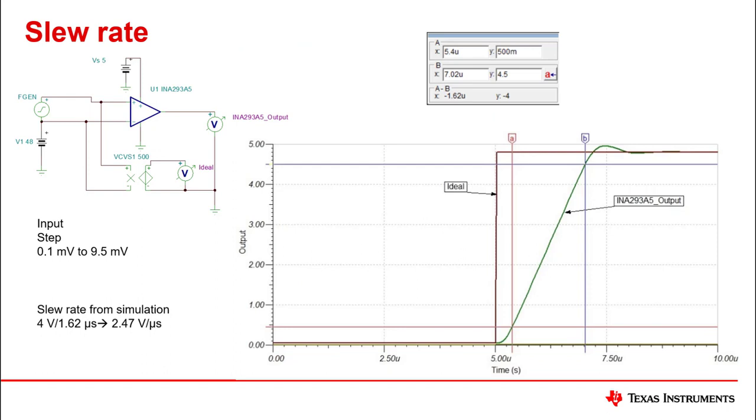Slew rate is normally tested and uses 10 to 90% of the range of the CSA. Given this, we will measure the slew rate in a transient response and operate from 0.1 millivolts to 9.5 millivolts. This will start the transition below the 10% and above the 90%. We then look at the transient and calculate the slew rate. We see a change of 4 volts for 1.62 microseconds. Changing this to the standard volts per microsecond, we get 2.47 volts per microsecond, which is close to the typical specification of 2.5 volts per microsecond.